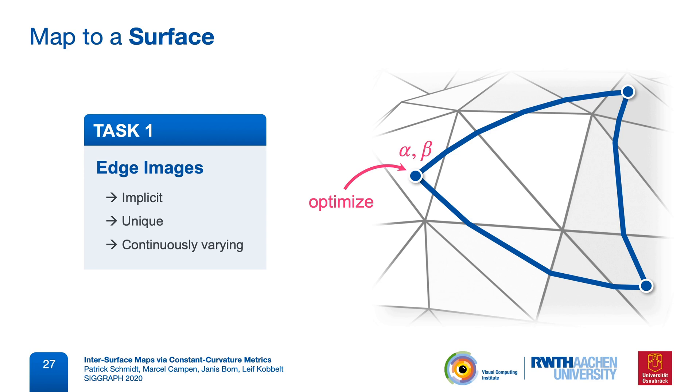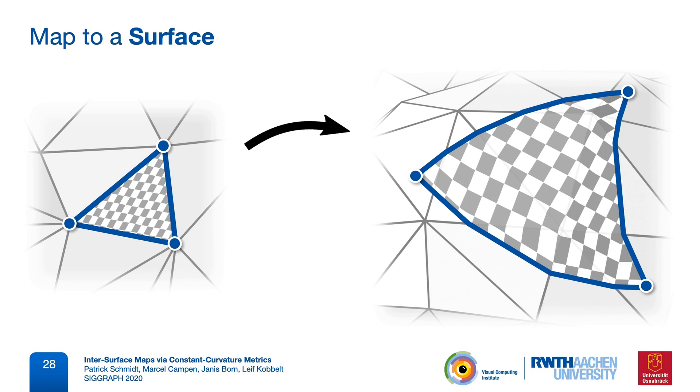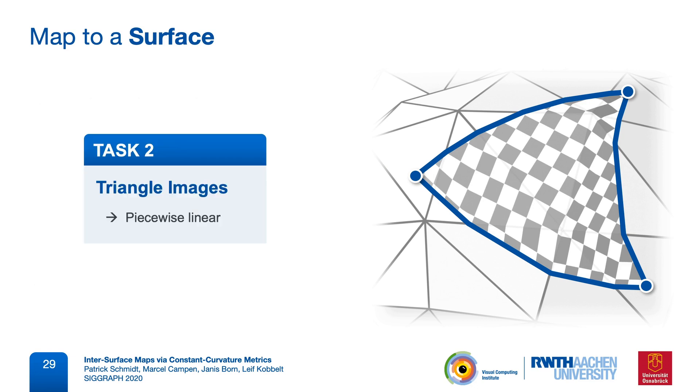The remaining task is then to decide on a parameterization inside triangles. And it would be nice to have one that is piecewise linear. We'll later see that once we've solved the first task, the second task will not be too difficult. So let's focus on how to map edges.